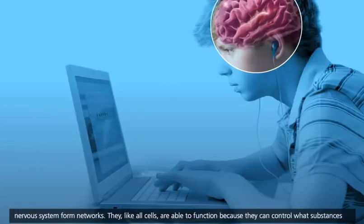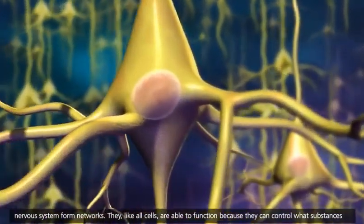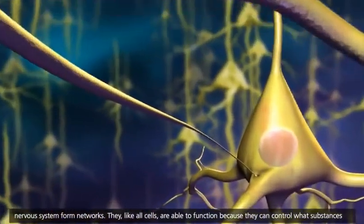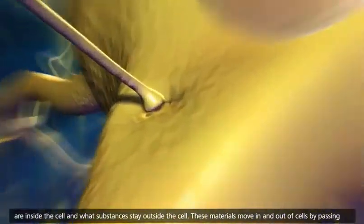The cells of the nervous system form networks. They, like all cells, are able to function because they can control what substances are inside the cell and what substances stay outside the cell.